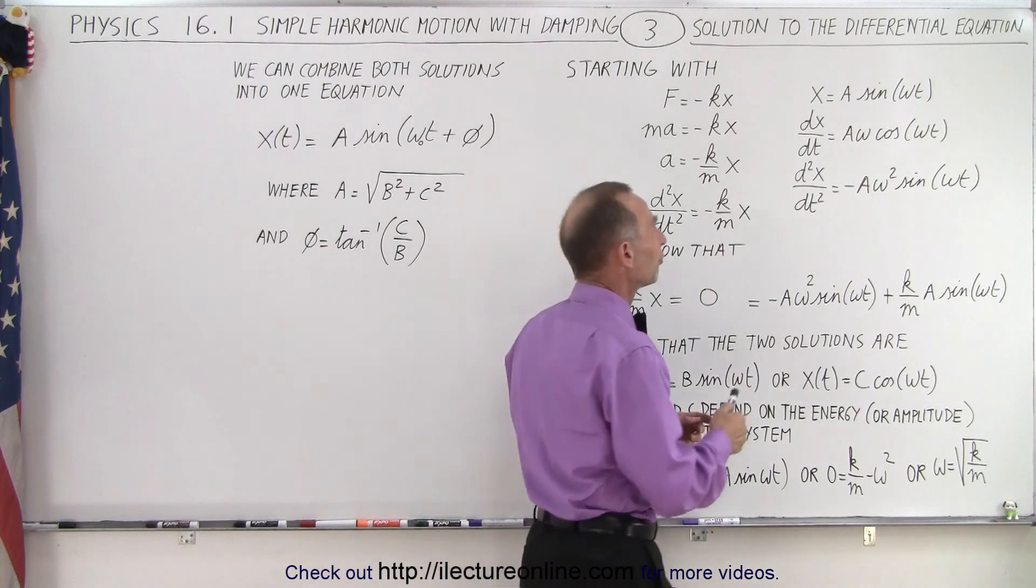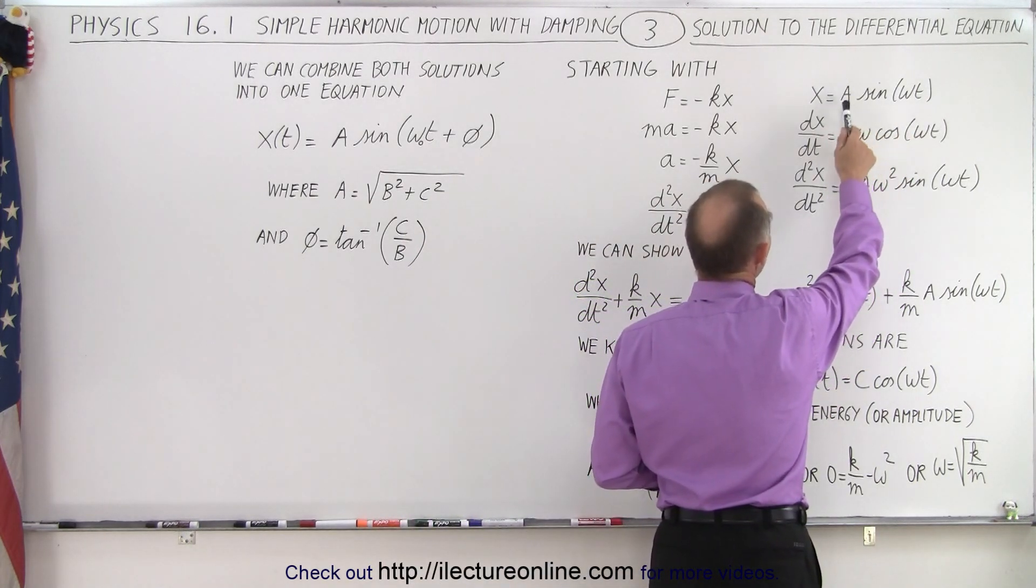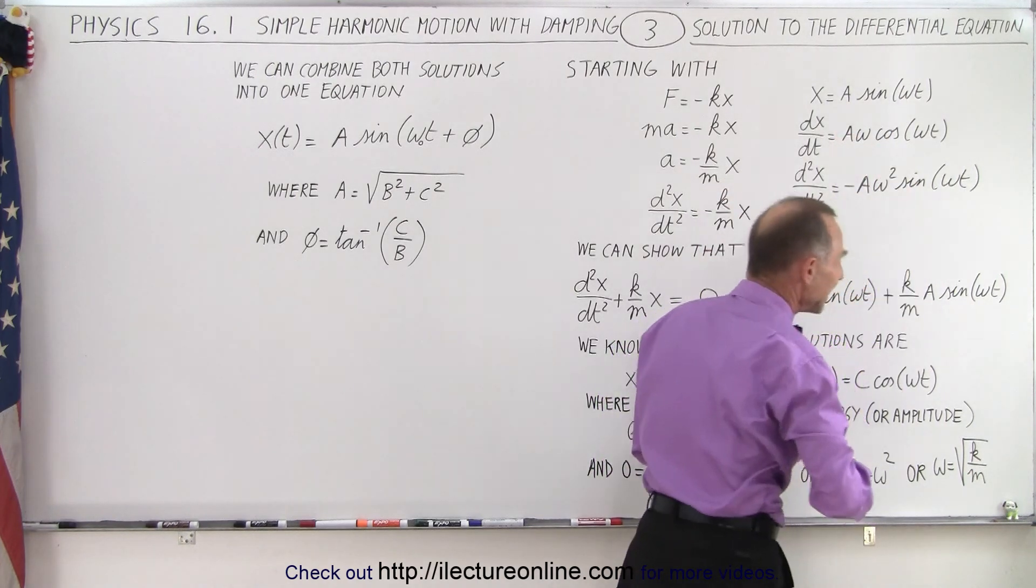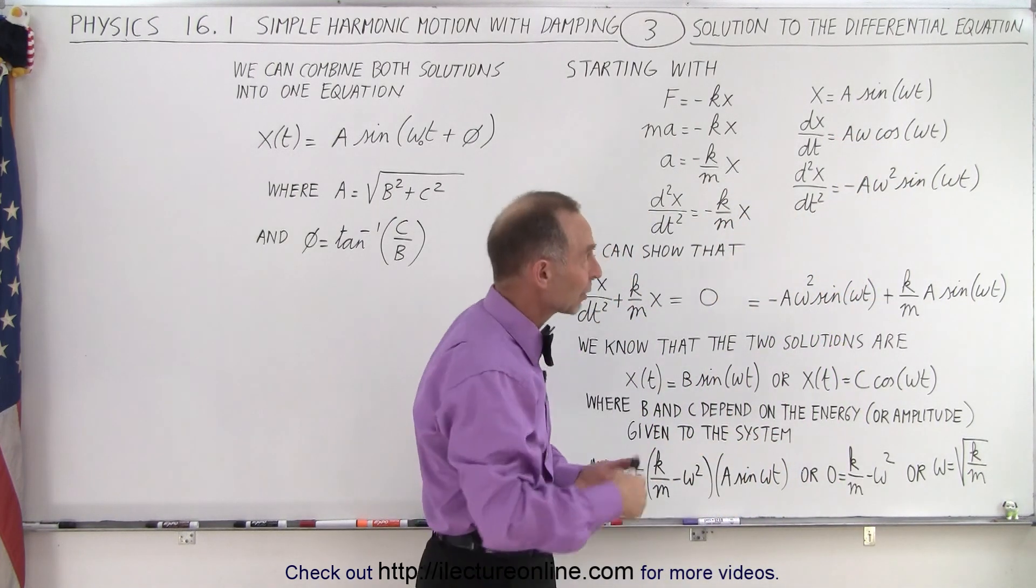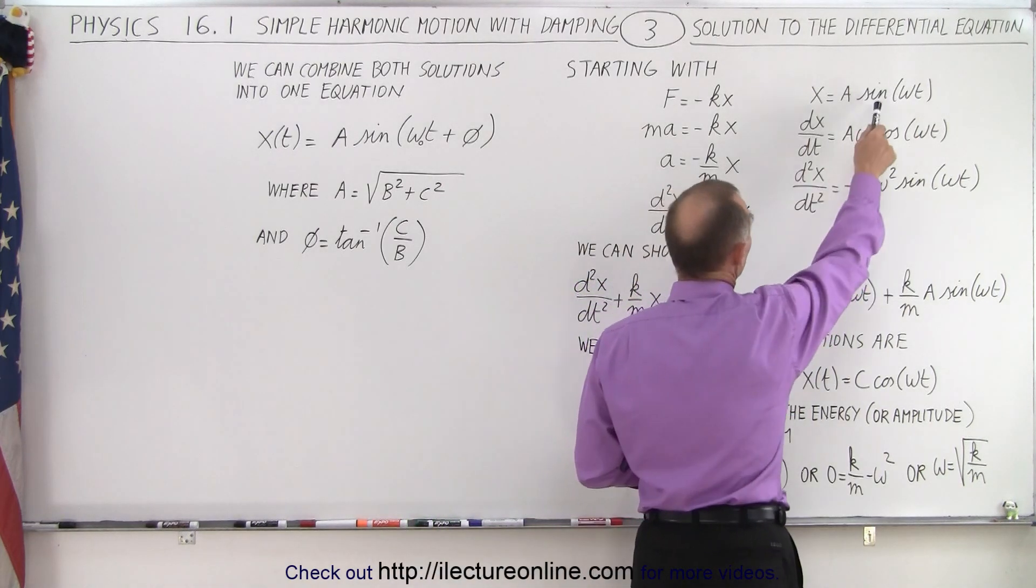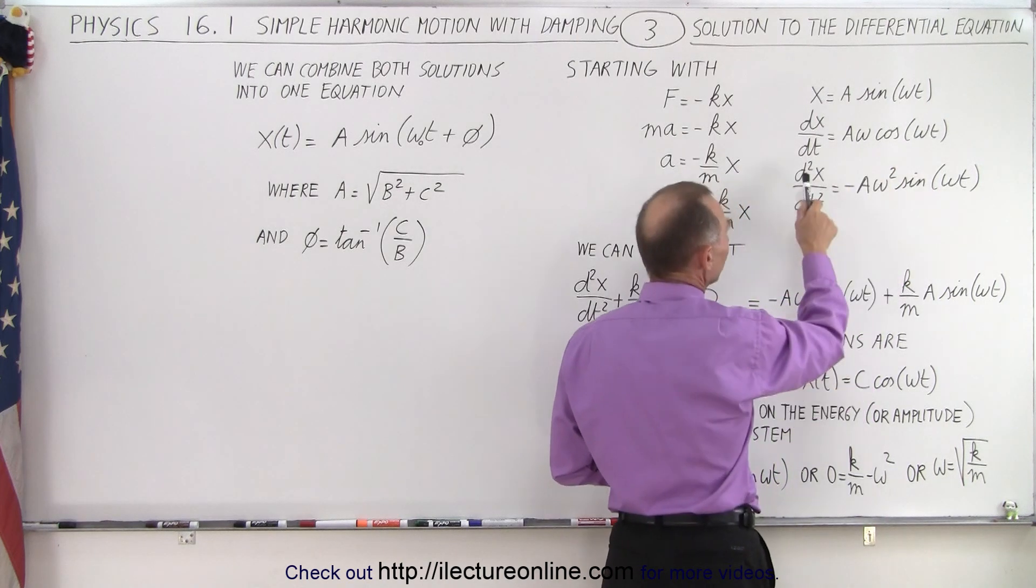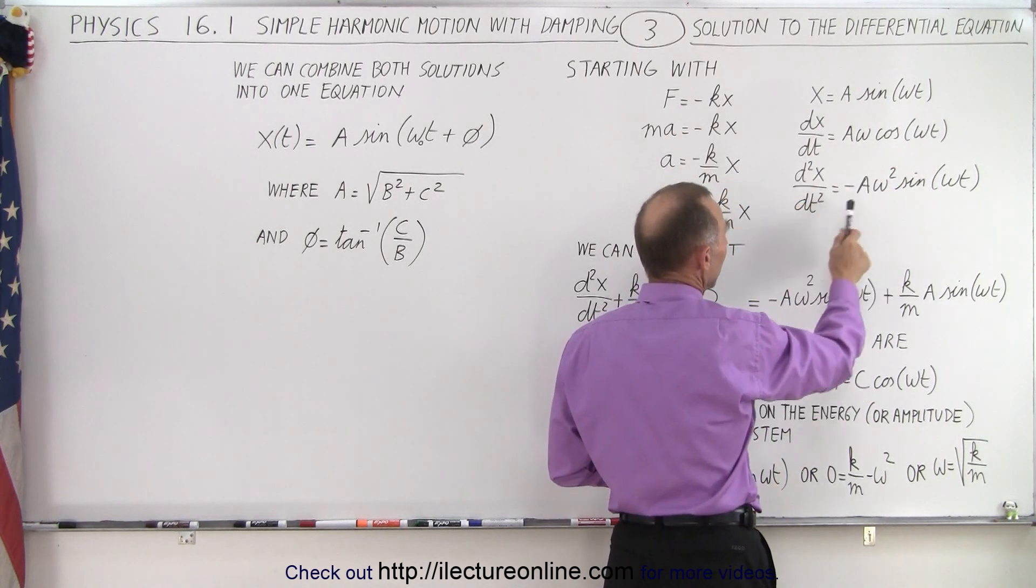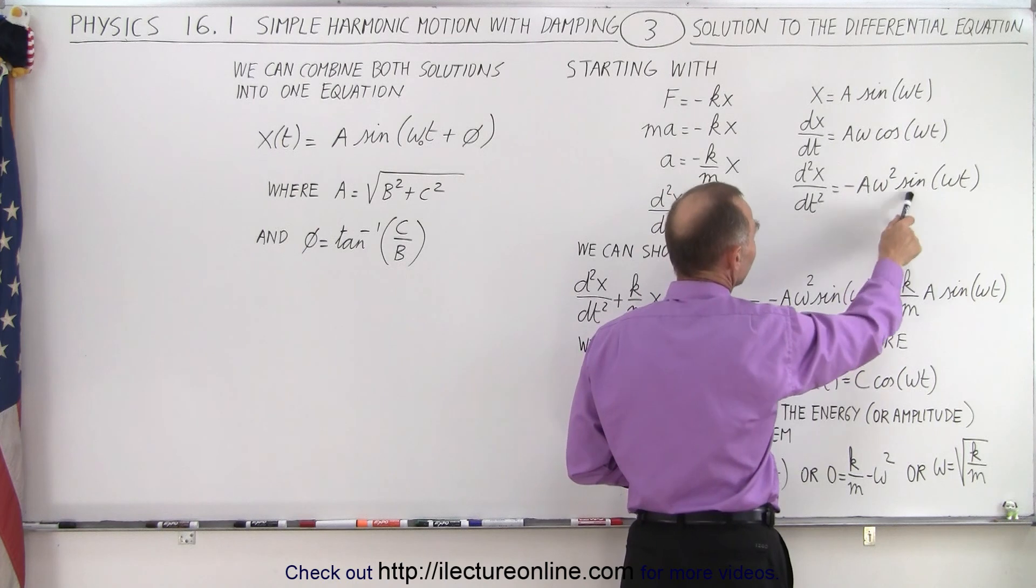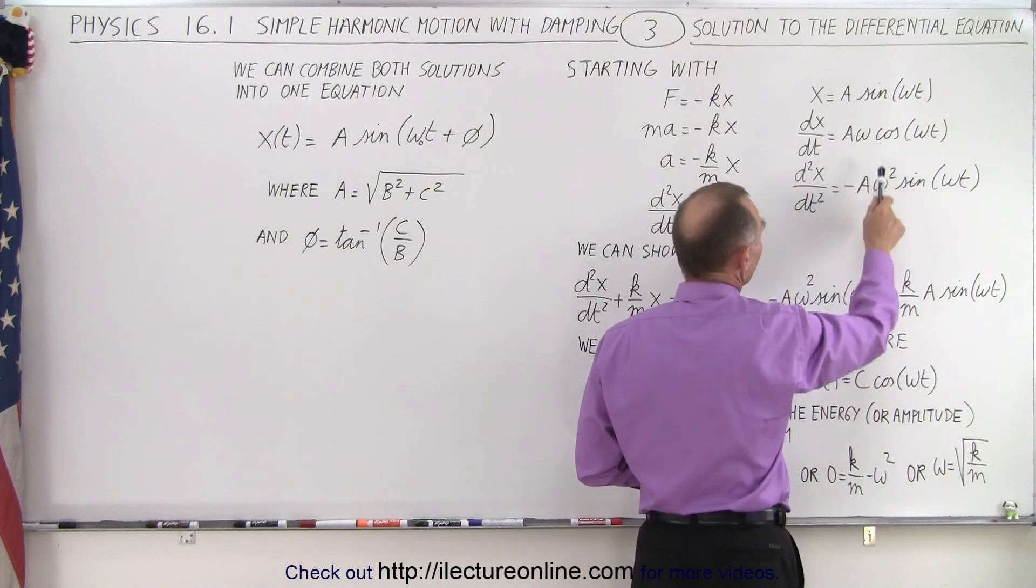We know that one of the forms of the solution, we can write that x equals A sine of omega t, A being the amplitude of oscillation, omega being the angular velocity or angular frequency of the motion. If we then take the first derivative of that, the derivative of sine is the cosine, derivative of omega t is omega. Take the second derivative of that, so now we take the derivative of cosine is the minus sine, and the derivative of omega t is again omega, so this becomes omega squared.